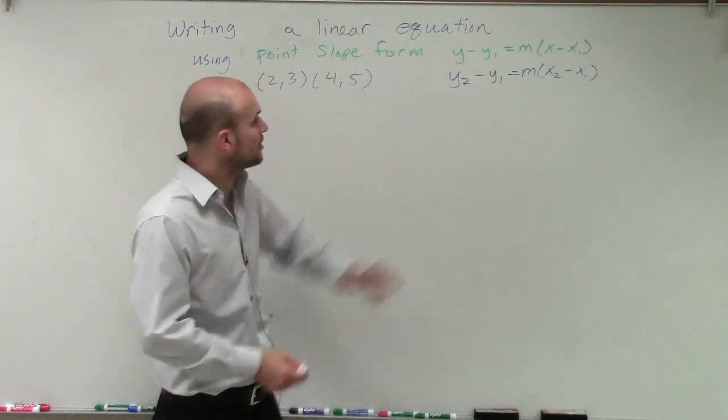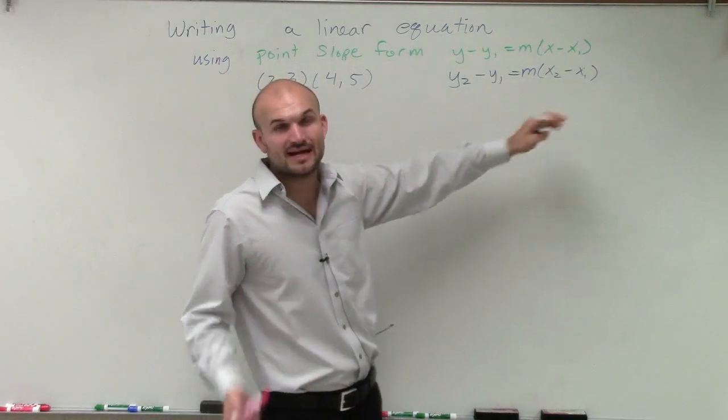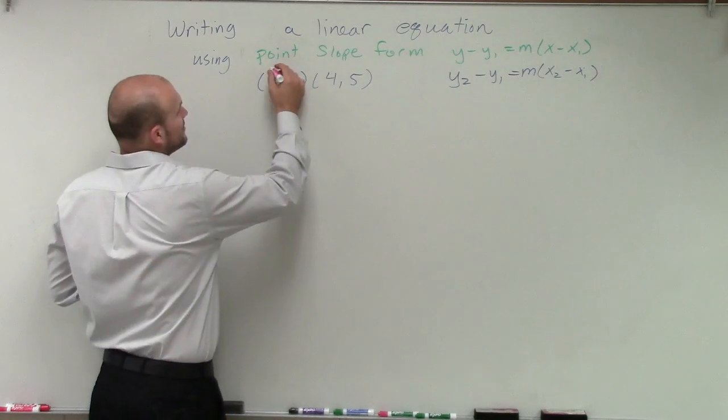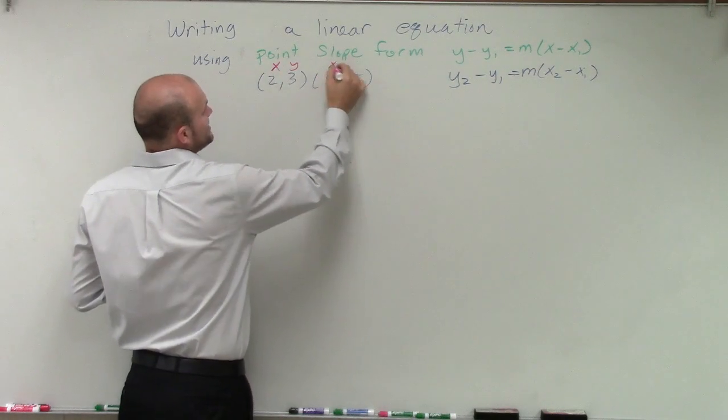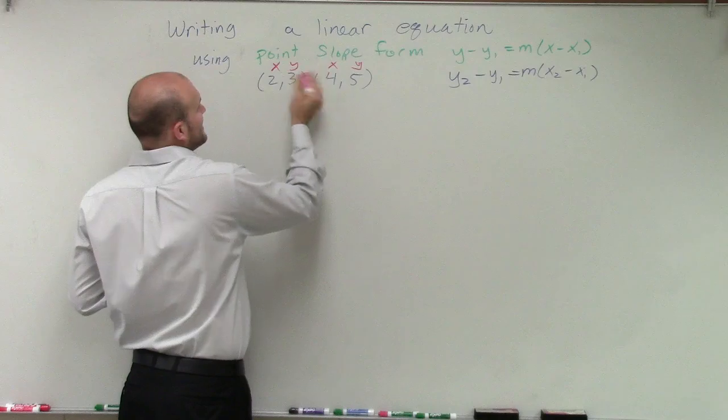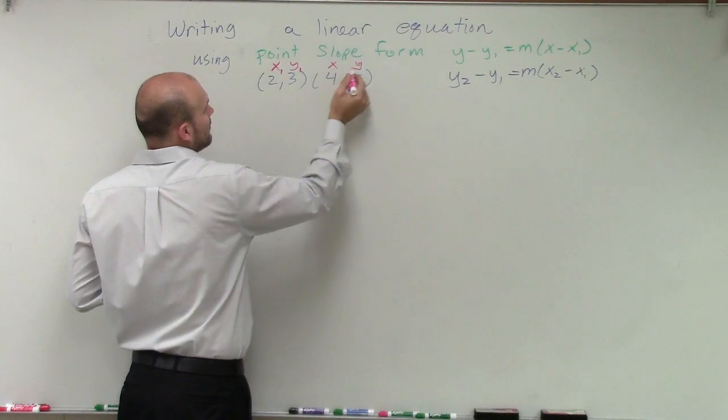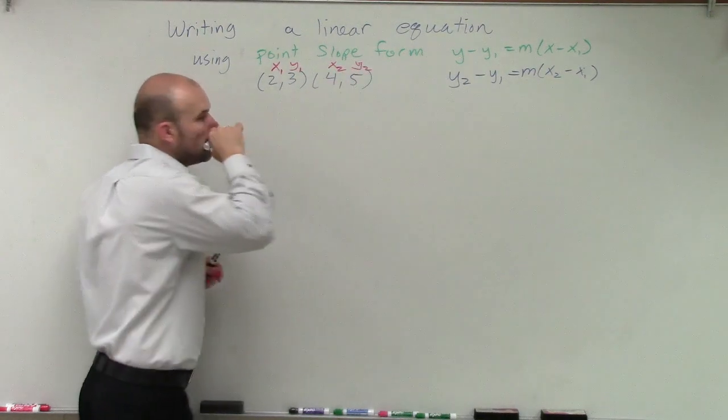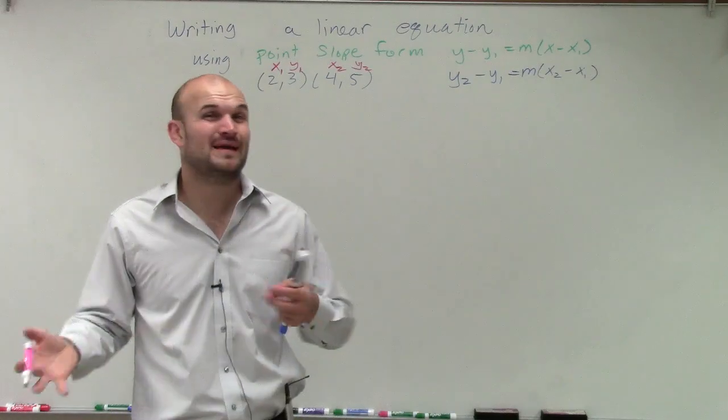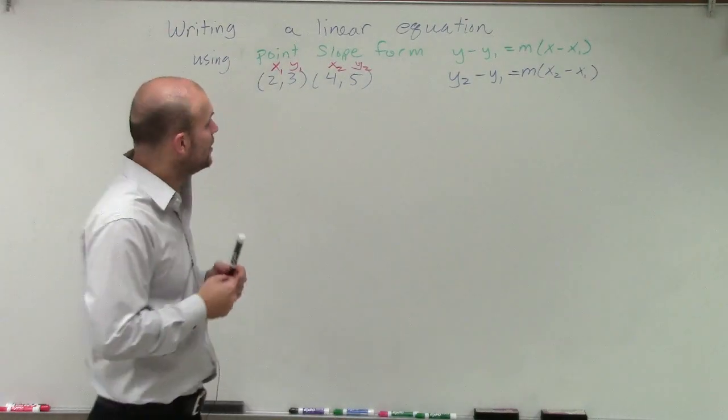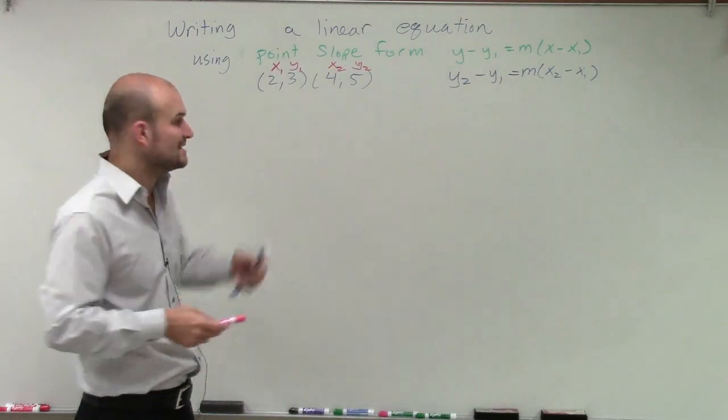Now notice on this point-slope form, we have the y2, y1, x2, and x1. So I'm just going to simply label my coordinates in that manner. So I'll say these will be x1 and y1. These will be x2 and y2. And again, like we remember when we were doing the slope format, it doesn't matter how you order them or how you label each coordinate as long as you're consistent.